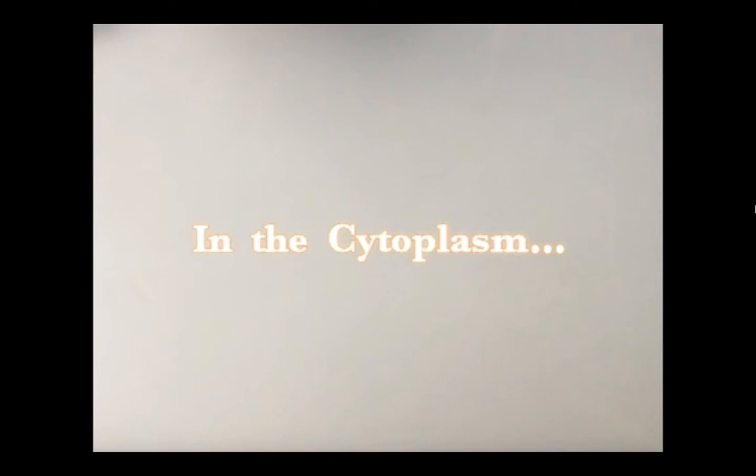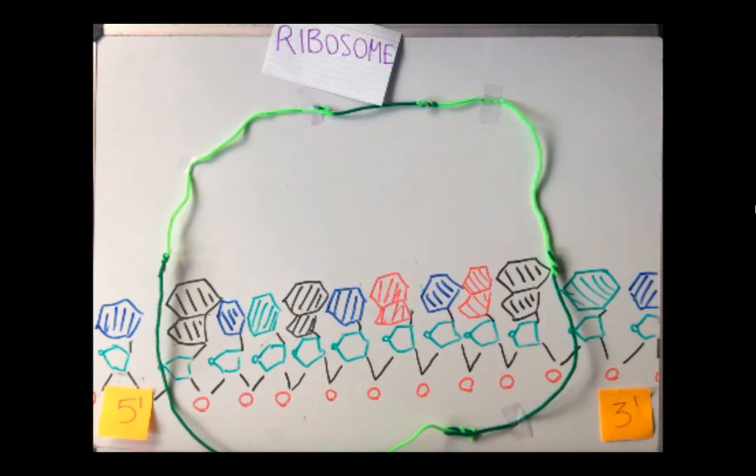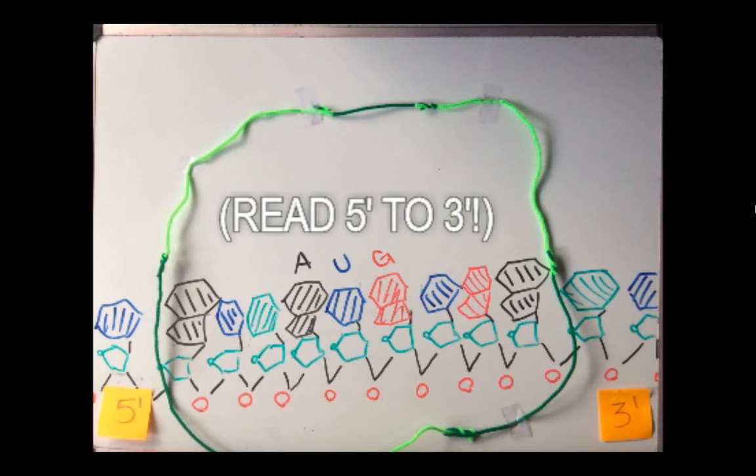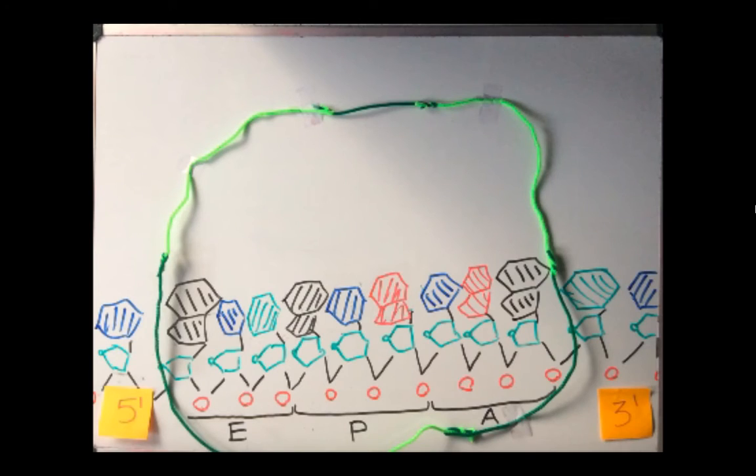Translation occurs in the cytoplasm of the cell. A ribosome binds to the mRNA strand at the start codon with the base sequence AUG. In the ribosome, there are three sections, the E, P, and A sections.